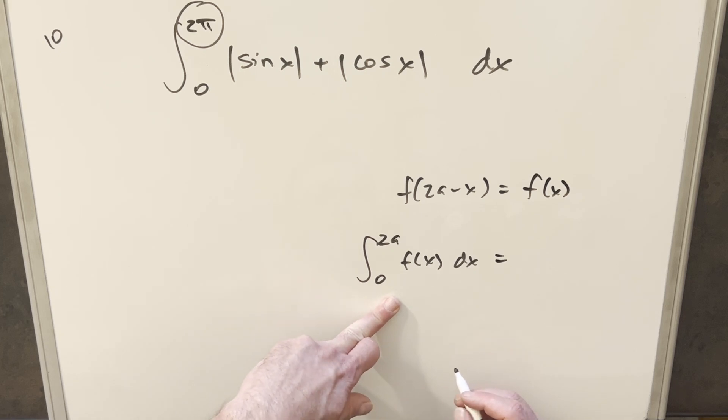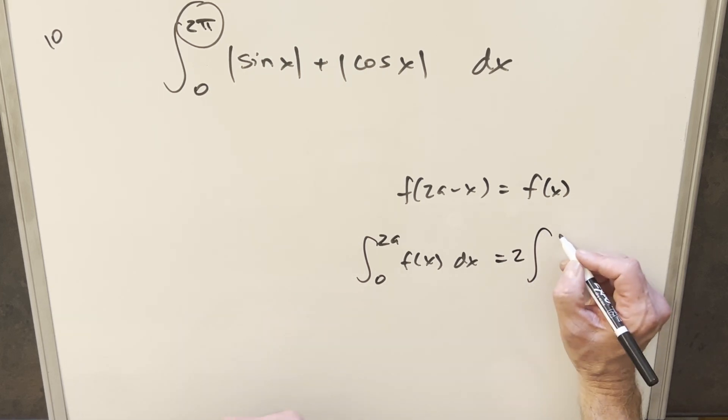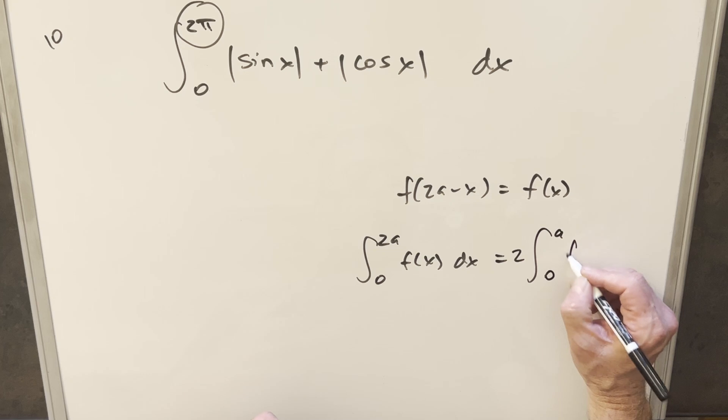that's going to allow us to reduce the bounds. We can bring a 2 out front, the bounds go from 2a to a, and we end up with the same function. We can just kind of repeat this over and over again.